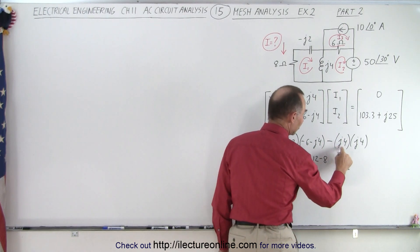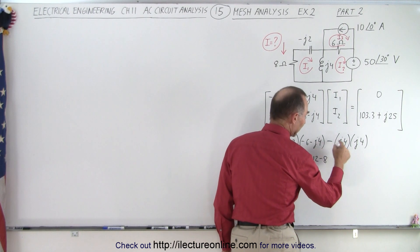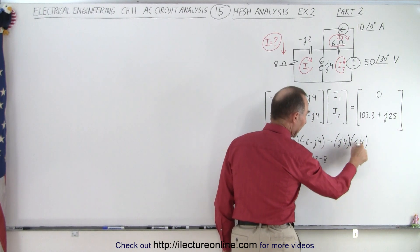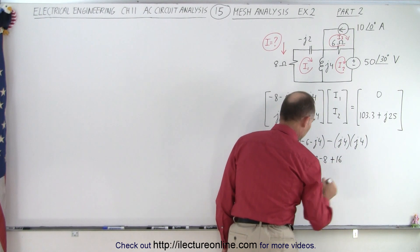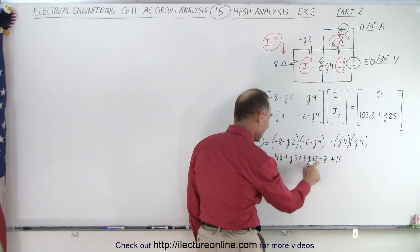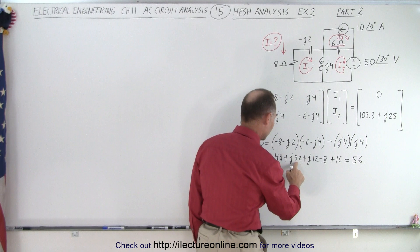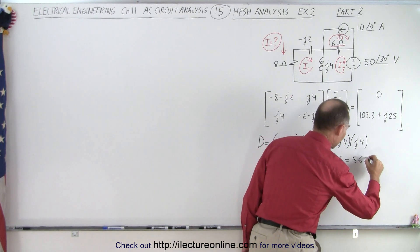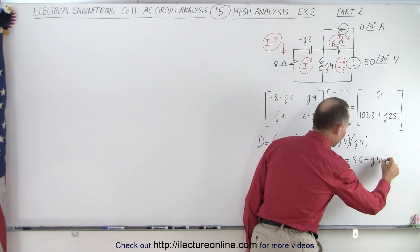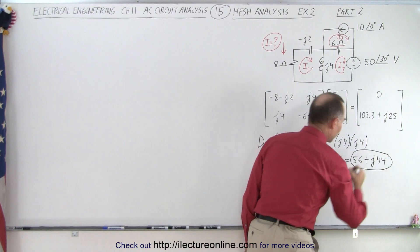And over here, we have J times J, that gives me a minus, but times a minus comes a plus, and 16. So combining that, we have 48 minus 8, which is 40, plus 16, which is equal to 56, and 32 plus 12, which is 44, so plus J44. And so that is the value of the determinant.